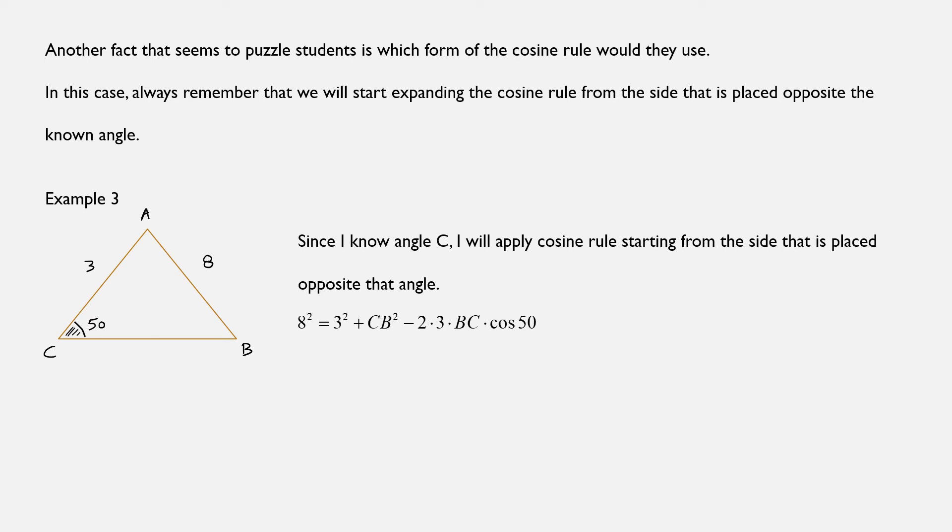So starting from AB, I should write that 8 squared is equal to the sum of the squares of the other two, 3 squared plus BC squared, minus two times the product of these two, 2 times 3 times BC, multiplied by the cosine of the angle between them. In this case, cosine of 50.